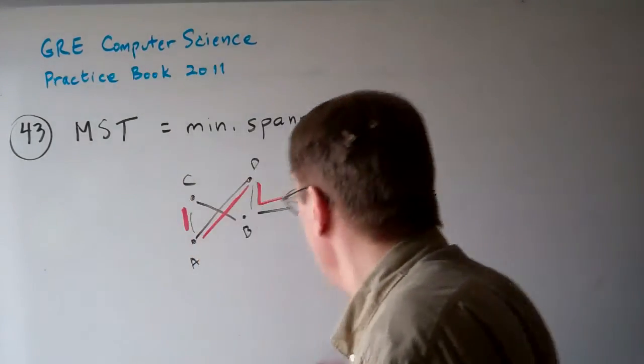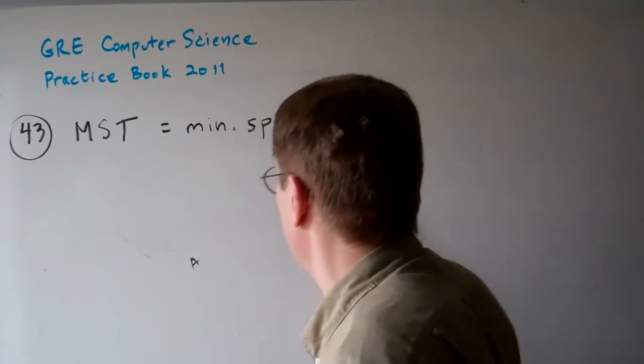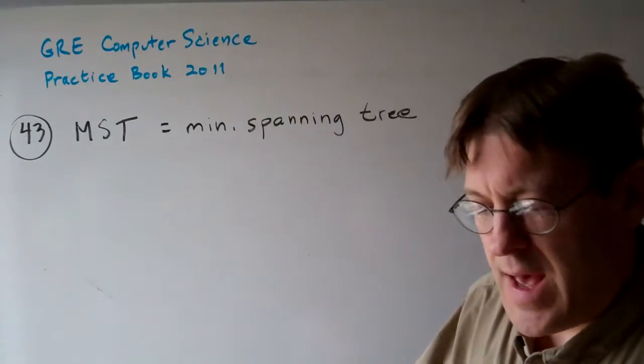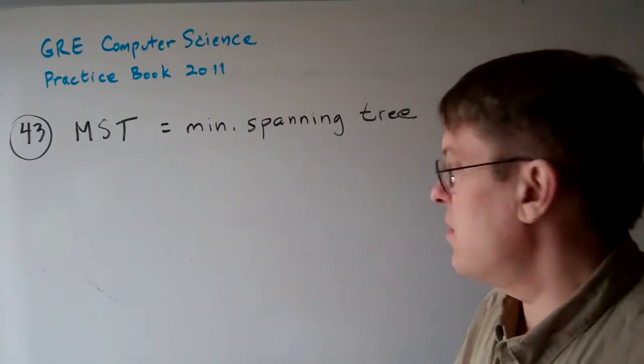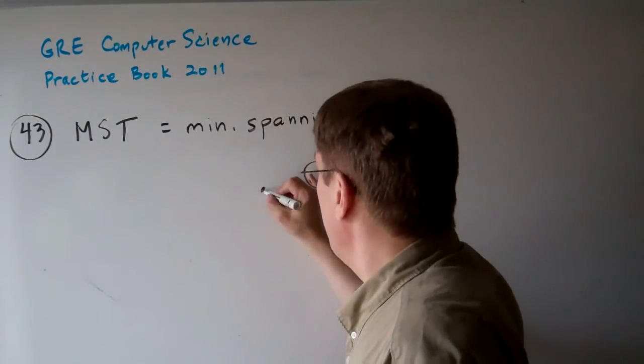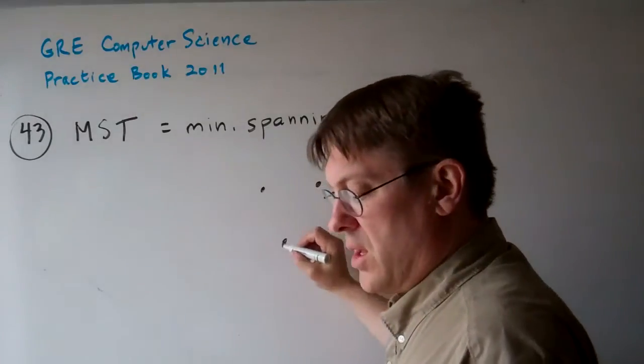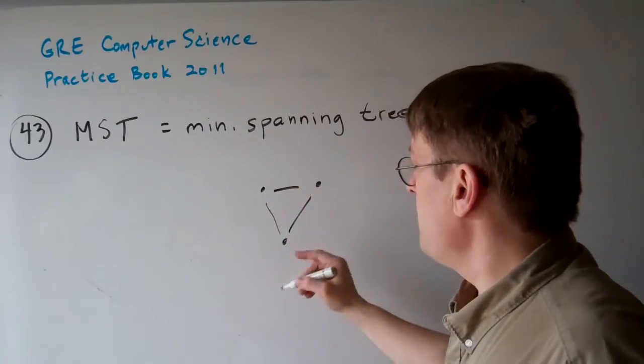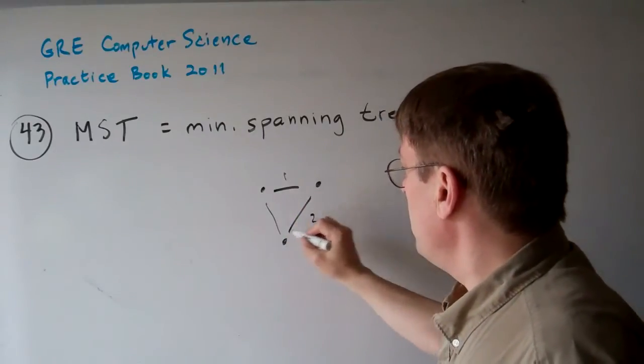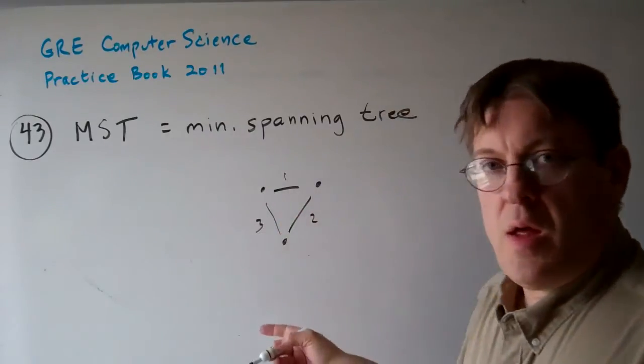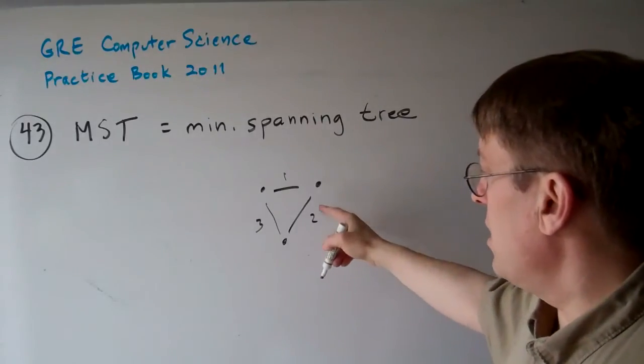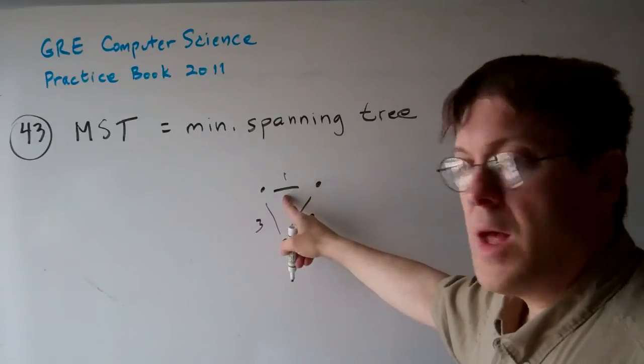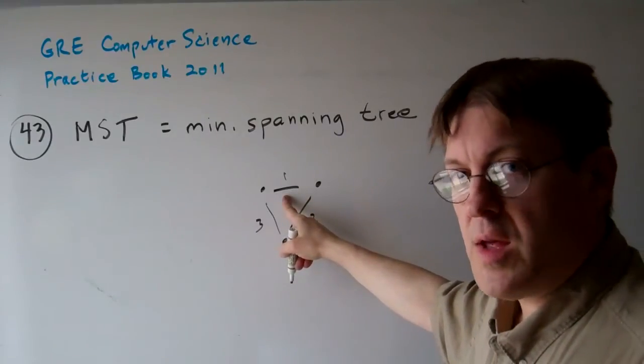But what about one and two? The spanning tree has to contain the shortest edge of the graph. Well, if we have a three, it says here you've got to have a minimum of at least three edges. So there's our three edges. If this is one and this is two and this is three, there's no way that we can get a minimum spanning tree without keeping edge number one, right? We've got to have the cheapest edge.